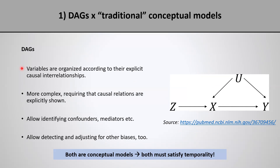When we draw a DAG, we need to organize our graph according to explicit causal relationships between variables. Therefore, DAGs are more complex than traditional conceptual models because they require that causal relationships are explicitly shown. They are very useful because they allow identifying confounders, mediators, etc., in a way that is more precise than traditional conceptual models. DAGs are also useful to detect and adjust for other sources of bias in addition to confounding, such as selection bias, as we're going to see throughout this lecture.